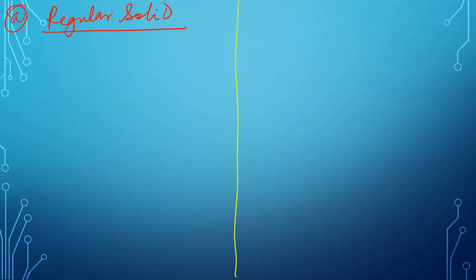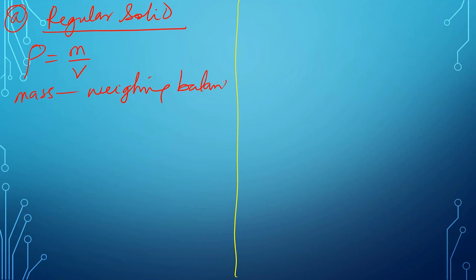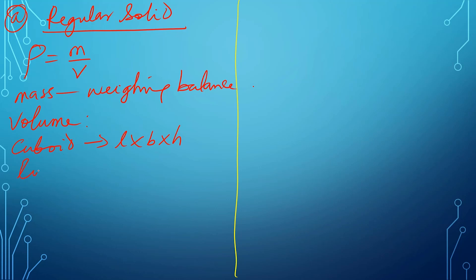Since density is mass over volume, we measure mass using the weighing balance. The volume of a solid depends on its shape. If it is a cuboid, volume equals length times breadth times height. If it is a cube, volume equals l cubed. If it is a cylinder, volume equals pi r squared h. If it is a cone, volume equals one-third pi r squared h. If it is a sphere, volume equals four-thirds pi r cubed.